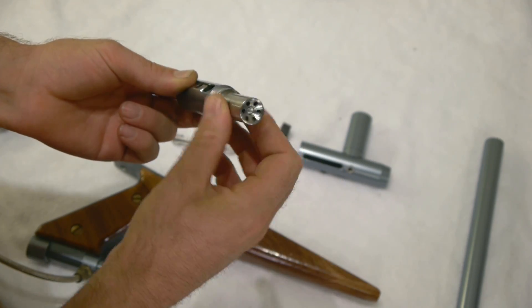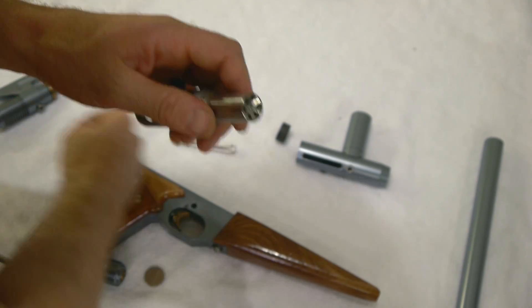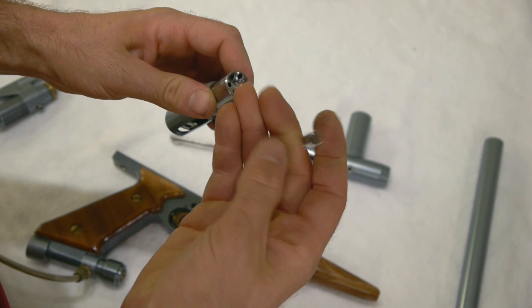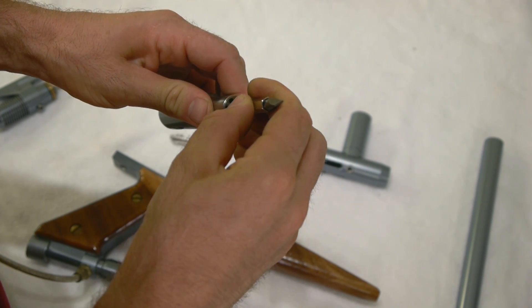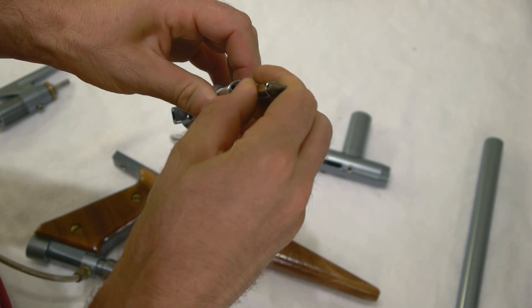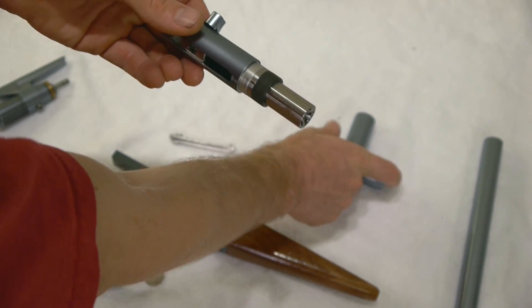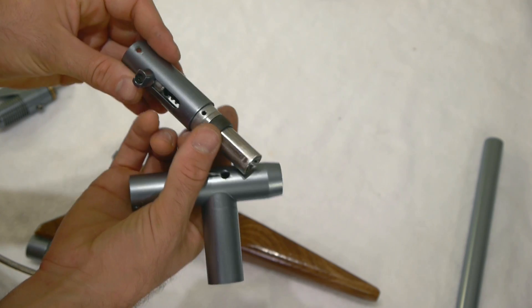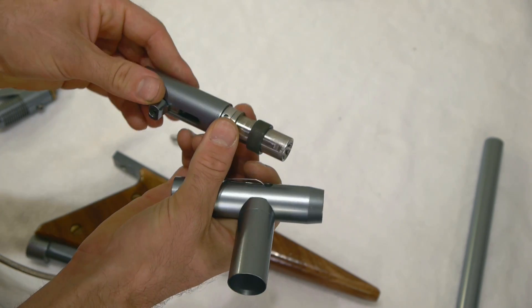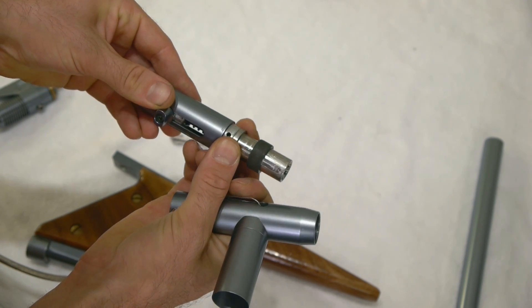Now we're going to quick strip the Nemesis. We'll start off by removing the barrel. I'm going to pull out a nickel from my bag of change. With the nickel, we'll unscrew the front grip frame screw, get that nicely unscrewed and pull it out. Next we can unscrew the brass valve body screw.